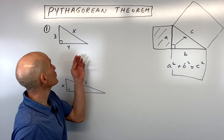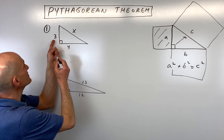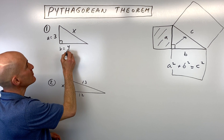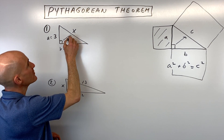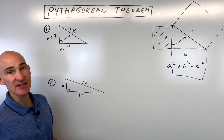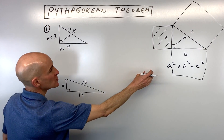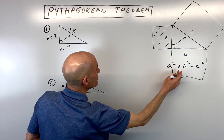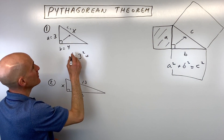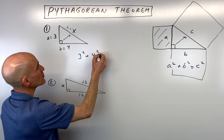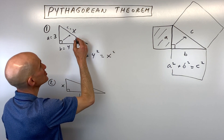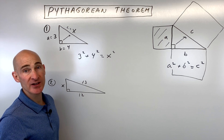Let me show you how this works with this first example. You can see that this side here is going to be a, this side here is going to be b, and the one that's across from the right angle, that side is going to be c. So if we go ahead and substitute into our Pythagorean Theorem, we have a squared, which is 3 squared, plus b squared, which is 4 squared, equals c squared — which in this case we just called x, so x squared.